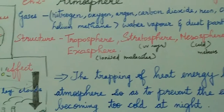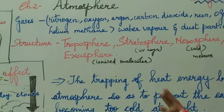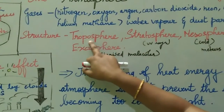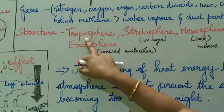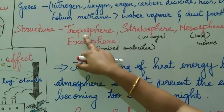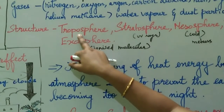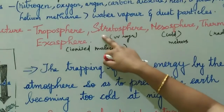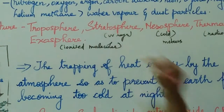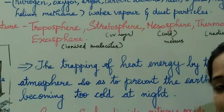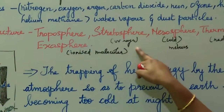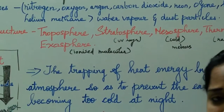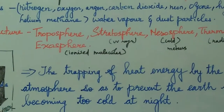Next we are going to discuss about the structure of the atmosphere. It starts at the lowest layer, the troposphere, which is the closest to the earth. Next is the stratosphere, which protects us from the harmful ultraviolet radiations from the sun.